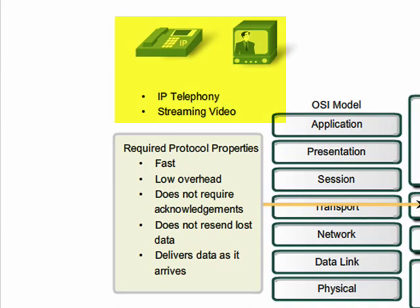Other applications, such as IP telephony and streaming video, are more tolerant of the loss of small amounts of data. For example, if one or two segments of a video stream failed to arrive, it would only create a momentary disruption in the stream.